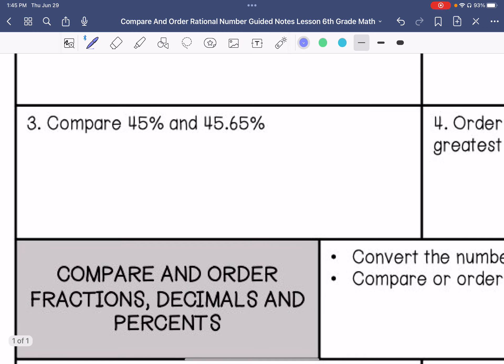If we're comparing 45% and 45.65, we can put a placeholder here, compare these. These are equal, these are equal. The .6 is greater, so 45.65 is greater than 45%.